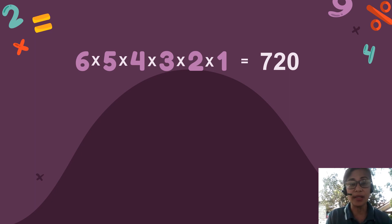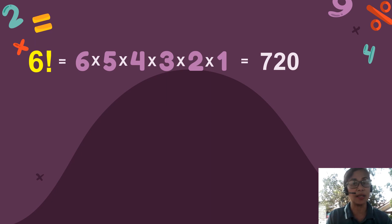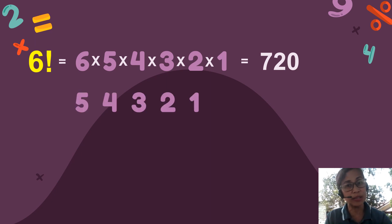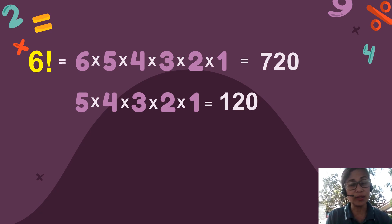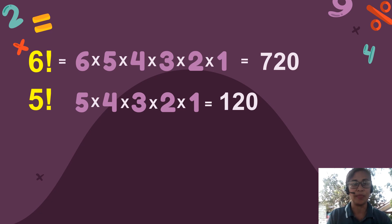Another way of writing this process is 6 factorial. So if I list again the numbers consecutively descending from 5 to 1 and multiply 5 times 4 times 3 times 2 times 1, that will be equal to 120. The shorter way of writing this process is 5 factorial. So this is our topic for today.